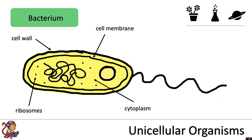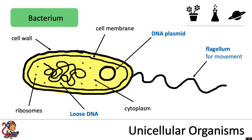You may notice however that the bacterium does not have a nucleus. Instead its genetic information is shared in two places. There is a ring of DNA called a DNA plasmid and there is also a strand of loose DNA. Some, but not all bacteria, also have a flagellum for movement.